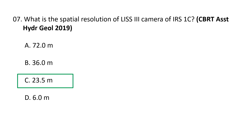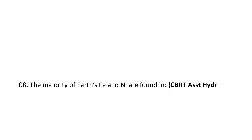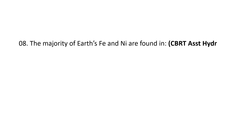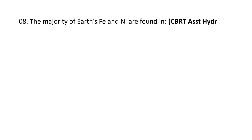The ground swath width is 141 kilometers. The fourth band, the short-wave infrared band, has a spatial resolution of 70.5 meters with a ground swath width of 148 kilometers. So the spatial resolution for LISS-3 camera of IRS-1C is 23.5 meters. C is the correct option.